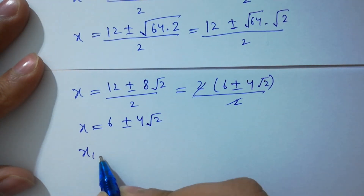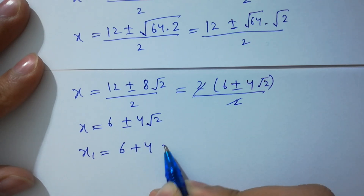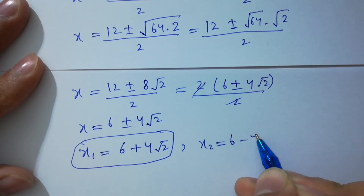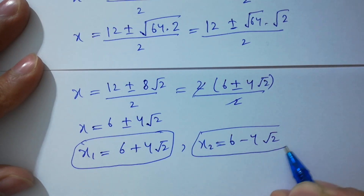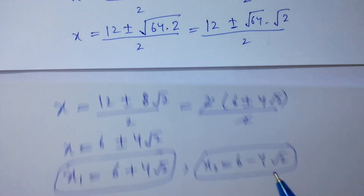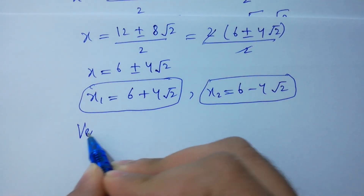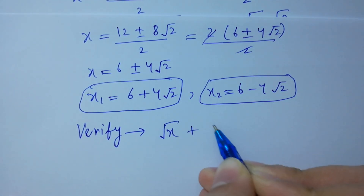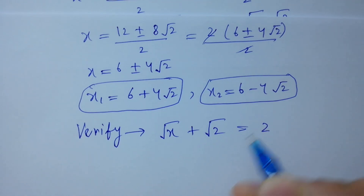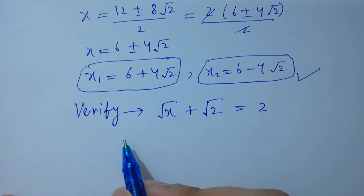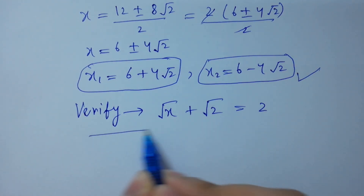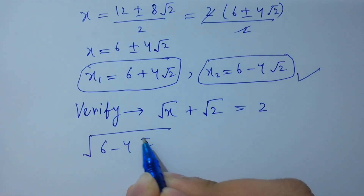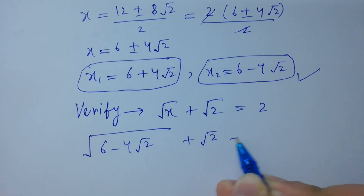We get x₁ equals 6 plus 4 square root of 2, and x₂ equals 6 minus 4 square root of 2. These are the values of x. Now verify: taking x₂ as 6 minus 4 square root of 2, substitute into square root of x plus square root of 2 equals 2.